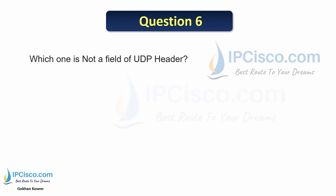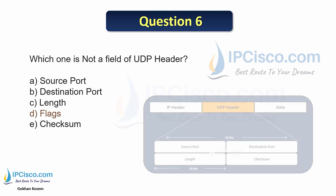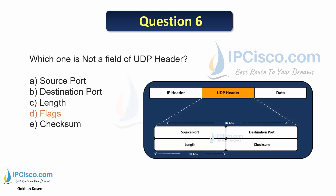Question 6: Which one is not a field of the UDP header? The options are source port, destination port, length, flags, and checksum. The answer is D — there is no flags field in UDP.